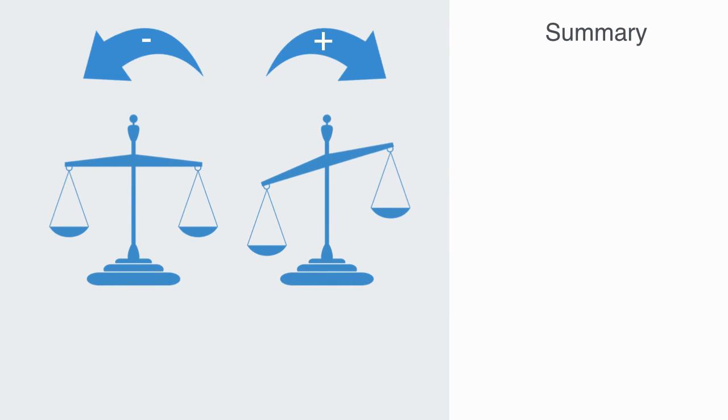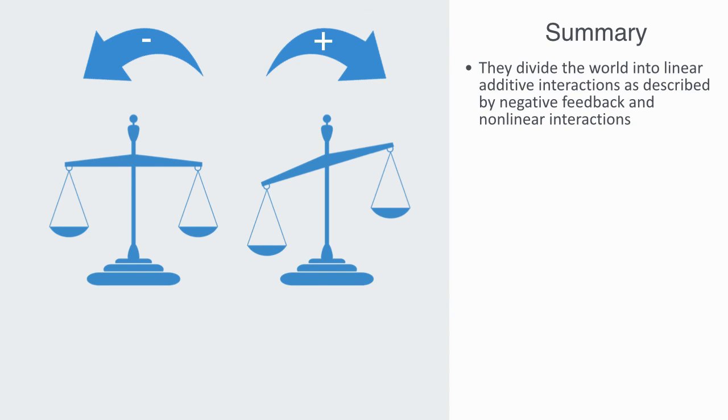In this module, we've been taking a quick look at the basics of causal link diagrams, as applied to microeconomics. Causal link diagrams help us to formalize non-linear phenomena, in that they divide the world into linear additive interactions, as described by negative feedback, and non-linear interactions, as described by positive feedback.